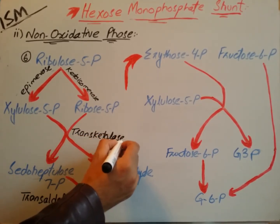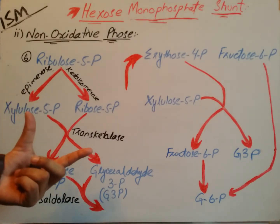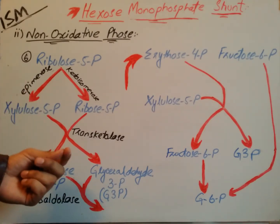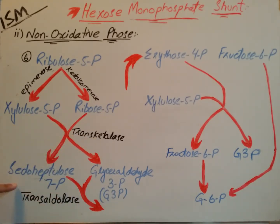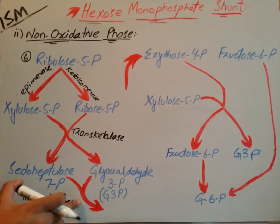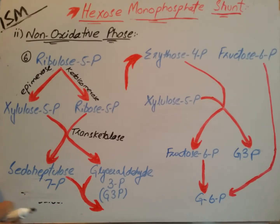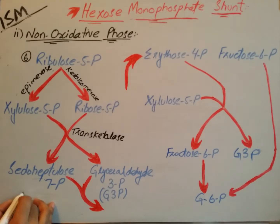Transketolase acts on xylulose-5-phosphate and ribose-5-phosphate — these two molecules react with each other and, in the presence of transketolase, are converted into sedoheptulose-7-phosphate and glyceraldehyde-3-phosphate. These two molecules — sedoheptulose-7-phosphate and glyceraldehyde-3-phosphate — then react further and are converted into two other molecules in the presence of the enzyme transaldolase.